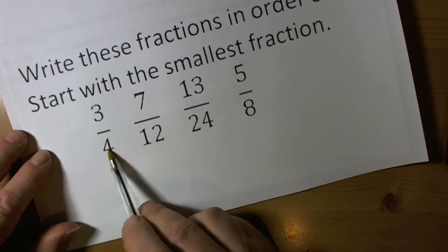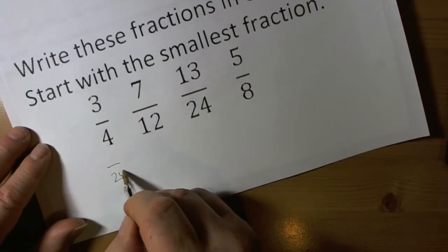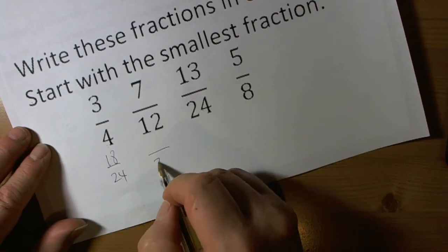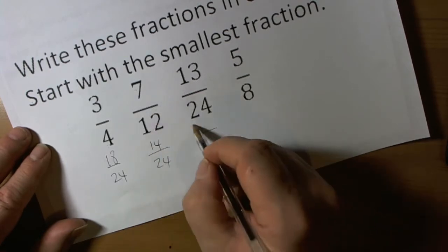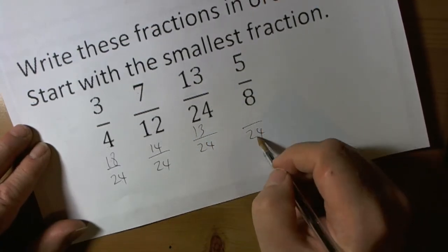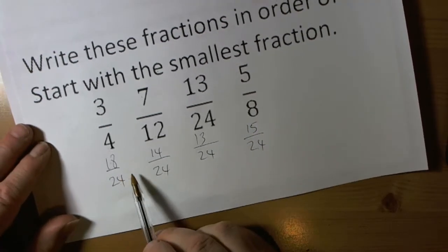We recognise that all of these are factors of twenty-four, so if we turn this one into twenty-fourths: four times six, so three times six. Twelve times two, so seven times two. This is already in twenty-fourths. And eight times three, so five times three.